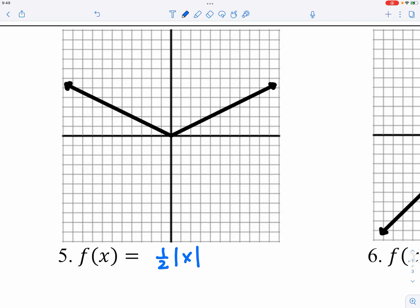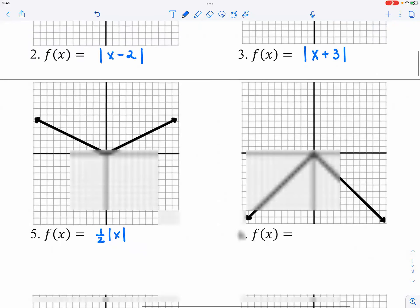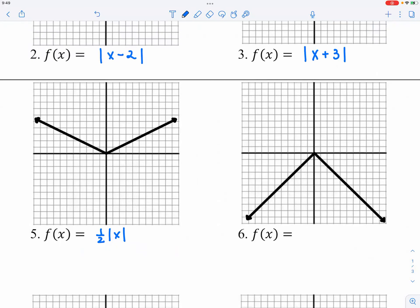And then for number six, you see the graph being flipped upside down. So therefore, it must be a negative sitting in front of the absolute value function. All right, so did you all get all six correct?